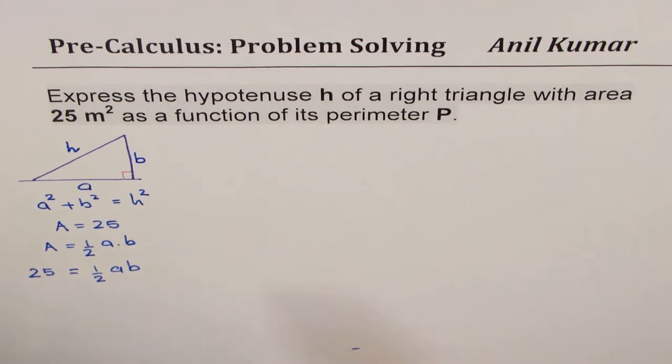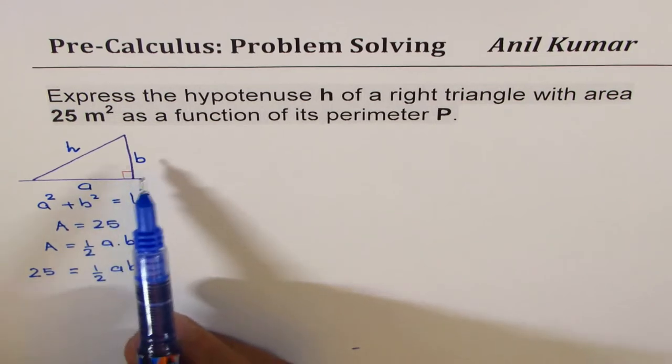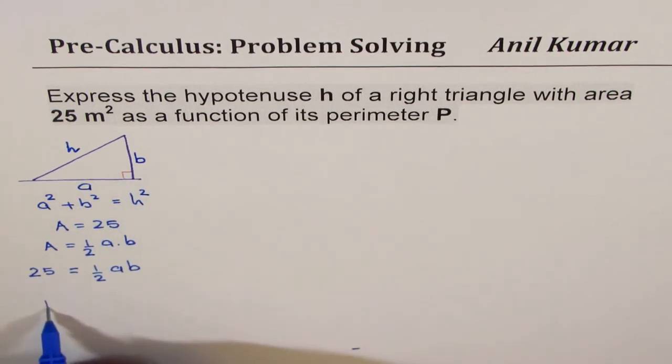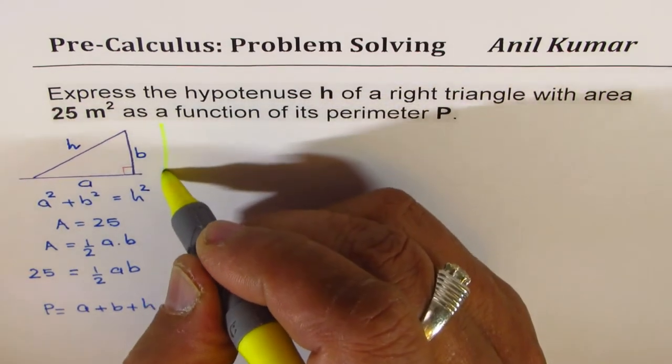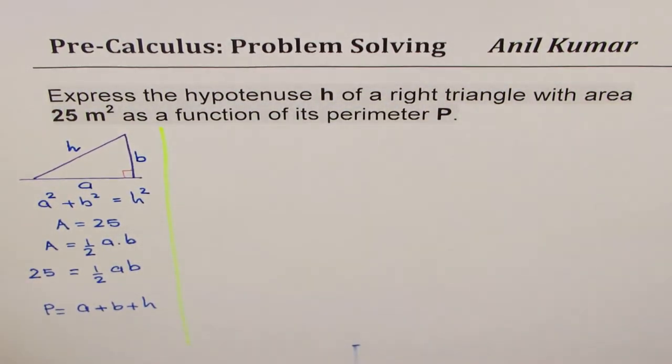Now we can also write what perimeter is. Perimeter is sum of all the sides, should be equal to a plus b plus h. So in a way, we have all the relations between different parameters or variables for this particular question. As you can see, a, b, h, and p are four different variables.